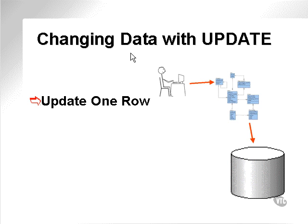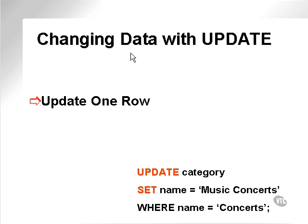Changing data with the UPDATE DML statement. We can update a single row, as shown in this example, where I'm going to update a category called concerts and change it to music concerts.